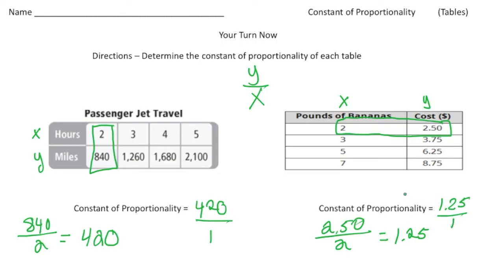That means for every one pound of bananas it costs you a dollar twenty-five. How did you do?